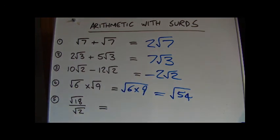Division, we can do the same kind of process. So we've got root 18 divided by root 2. Combining them under a single root gives us 18 divided by 2. We can simplify that to root 9, and in this